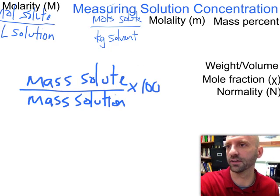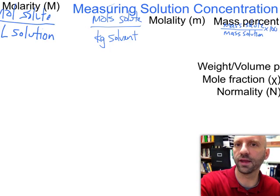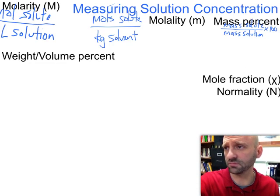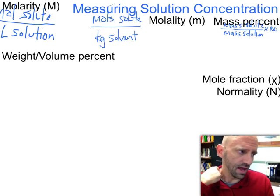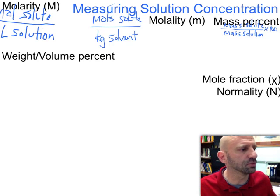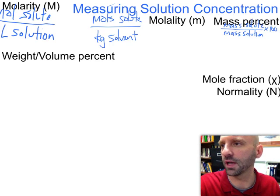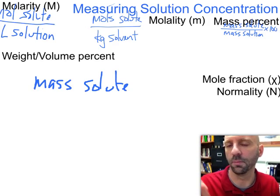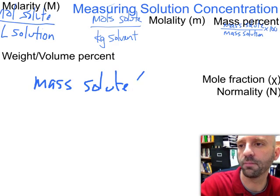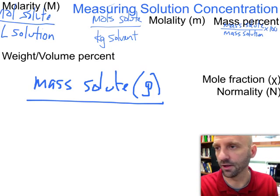Next is one that I don't think you've seen before. It's called weight by volume percent. This one has some similarities to mass percent, but we're going to have some specifics here. In the numerator we are going to have the mass of the solute, but one particular point is we want to measure that mass in grams. We're going to divide it by the volume of the solution, and that's going to be measured in milliliters.